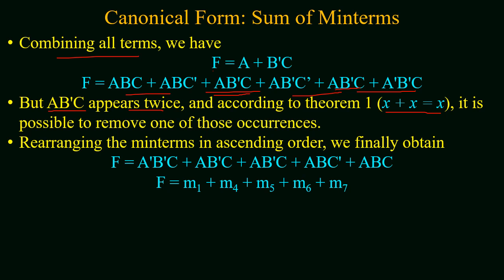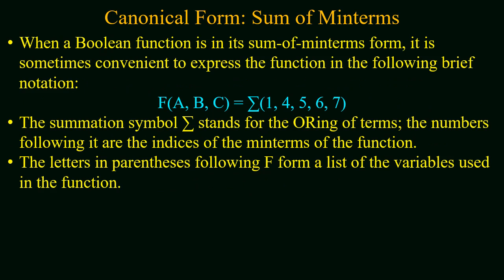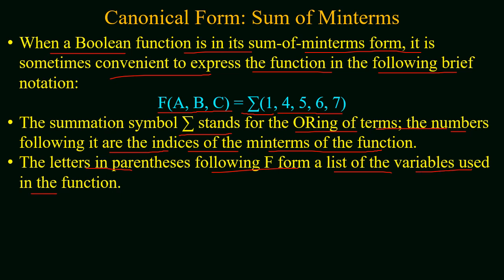Rearranging the minterms in ascending order, we get the final form of function f as a sum of minterms, equal to the sum of m1, m4, m5, m6, and m7. This can also be written in brief notation as f(a, b, c) = Σ(1, 4, 5, 6, 7), where the summation symbol represents ORing of the terms, the numbers are the indices of the minterms, and the letters in parentheses represent the list of input variables.